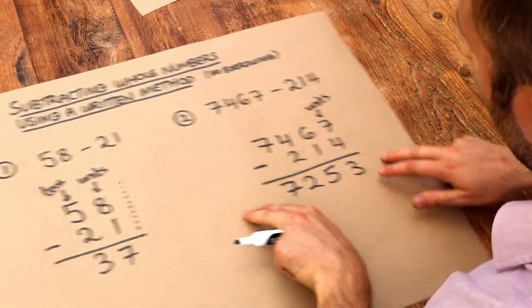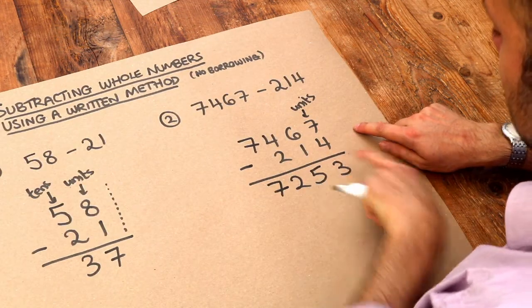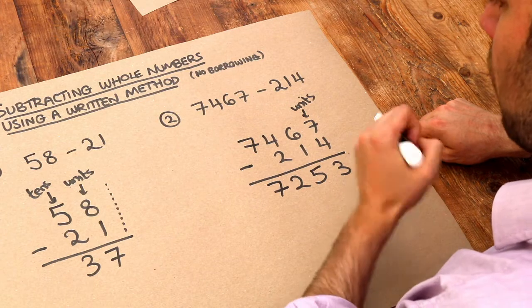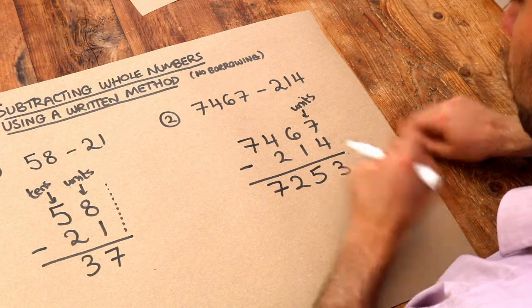In the next video we'll see harder problems where sometimes you can't do this digit minus this digit because the bottom one is bigger, and we'll see how we can work that out using a method called borrowing.